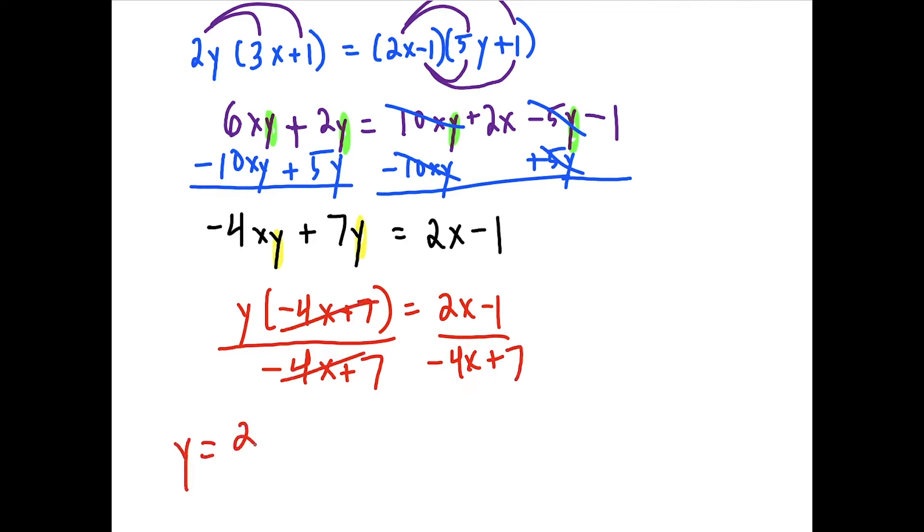And one last thing I'll comment on before we end here is that some people may have decided to do minus 6xy minus 2y on both sides. And if you solve it that way, you'll get a slightly different looking answer, but it's the same answer. So just know that this is our final answer. But if you solve it a different way, once again, moving the 6xy and 2y over instead of the 10xy and negative 5y. Well, your answer is going to come out different, but it's still equal to this answer here.